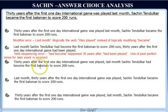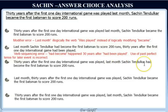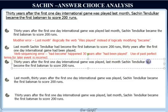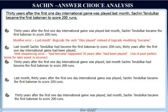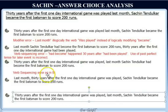Choice C reads: '30 years after the first one-day international game was played, last month, Sachin Tendulkar had become the first batsman to score 200 runs.' Here the modifier error with 'last month' has been corrected because it now appears in the second clause after the comma. But looking at the verb tense, 'had become' is not correct because we cannot use past perfect tense for the later event. So this choice also has a verb sequencing error, similar to choice B.